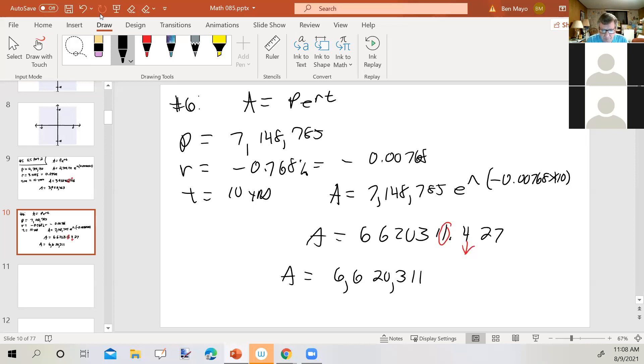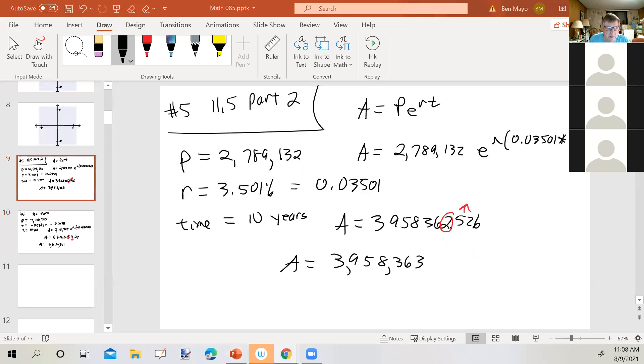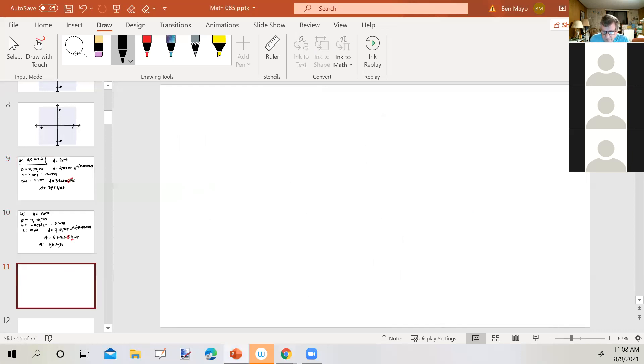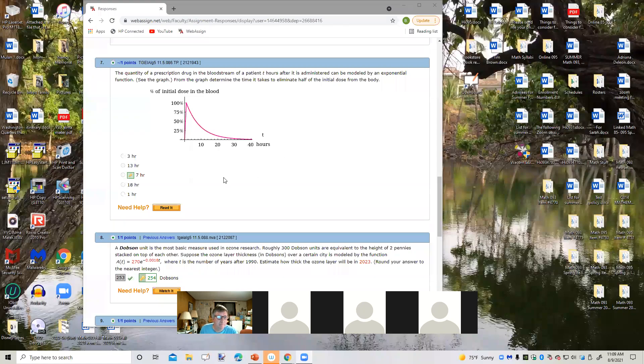Any other questions, anybody, before we go on? Would you do number seven? Okay. Part two? Sure. Let me... Okay. Let's see here. Number seven. All right. Let's see here. Is this it right here? Yes. Okay. Great. So what have we got? This is the quantity of a prescription drug in the bloodstream of a patient T hours after it is administered can be modeled by the exponential function. See the graph.